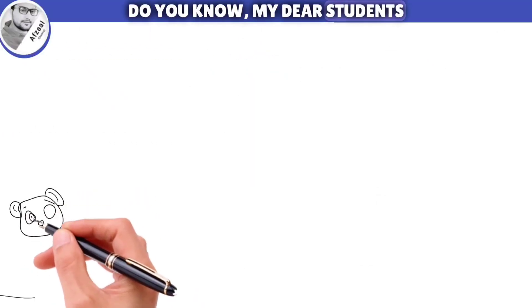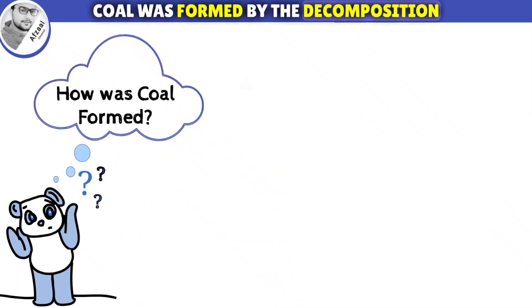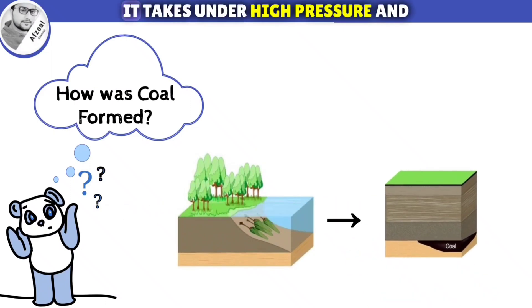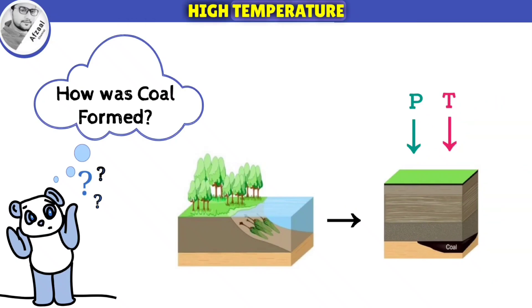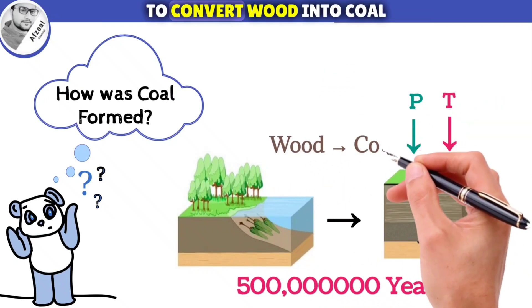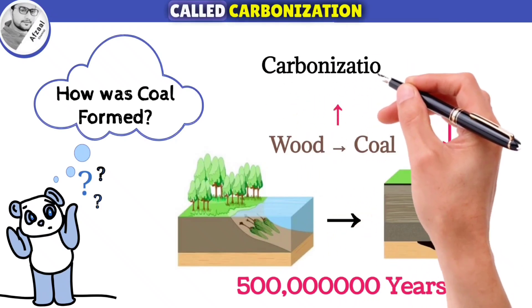How was coal formed? Coal was formed by the decomposition of dead plants that are buried under the earth's crust. It is a very slow biochemical process. It takes under high pressure and high temperature. It takes about 500 million years to convert wood into coal. This conversion of wood into coal is called carbonization.